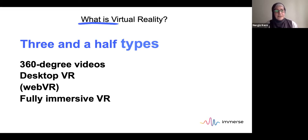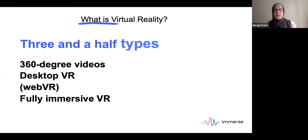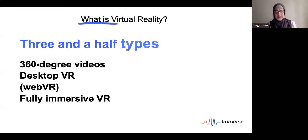The half type is web VR. This is very interesting because you don't have to download anything onto your computer or headset — you join via a link. The teacher just gives the link to students and they can join. An example of this is Mozilla Hubs, and within this event you will have a presentation on it. Students can join with a headset, but also via their computer or a tablet.